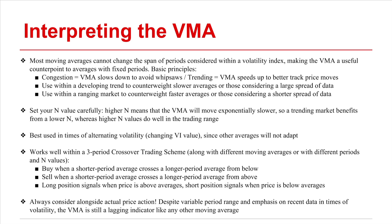The indicator works well in the context of a traditional three-period crossover trading scheme with three moving averages moving with respect to different periods or even different N values. A buy signal occurs when a shorter period average or lower N value average crosses a longer period or higher N value average from below, whereas sell signals come when a shorter period or lower N value average crosses a longer period average from above.